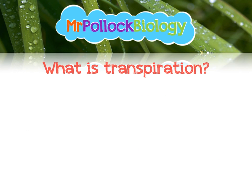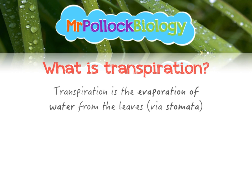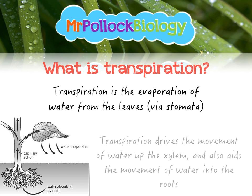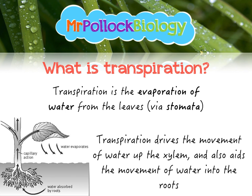So what is transpiration? Transpiration is the evaporation of water from the leaves, and this occurs through the tiny pores on the underside of a leaf called stomata. Transpiration is vitally important because it drives the movement of water up the xylem by cohesion tension theory, and it also aids the movement of water into the roots itself.